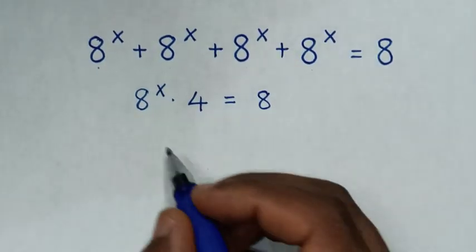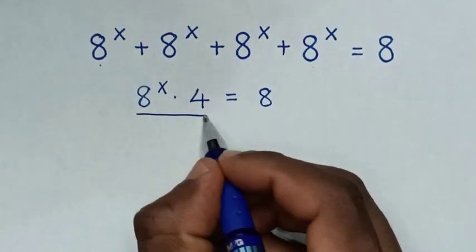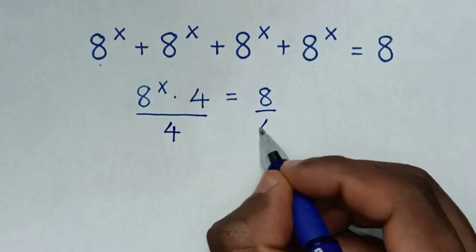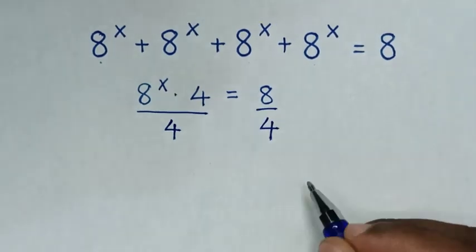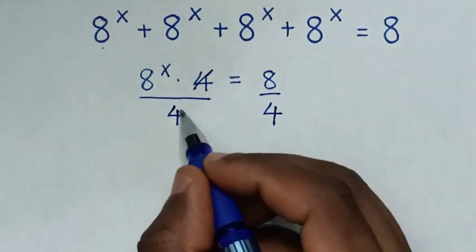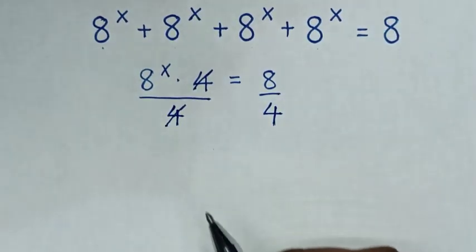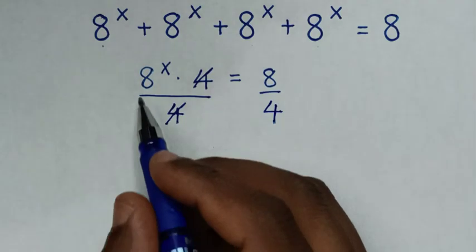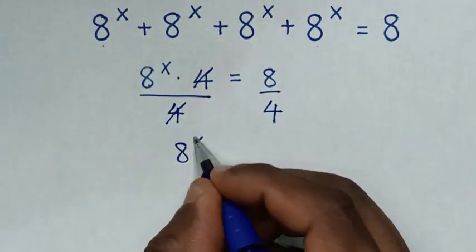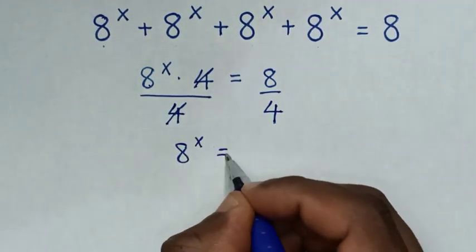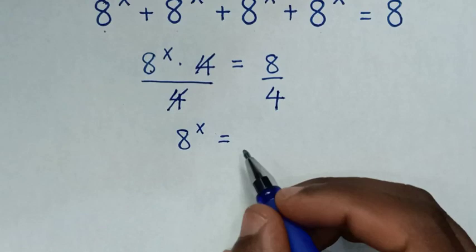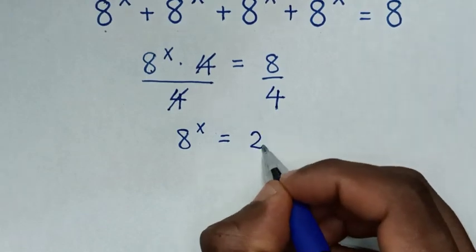In the next step we divide by 4 on both sides. So this 4 and this 4 will cancel. Then it will be 8 power x is equal to 8 divided by 4, which is 2.